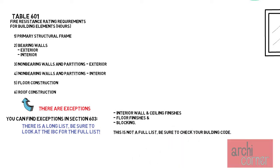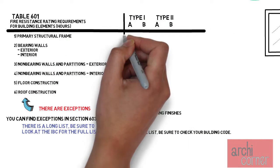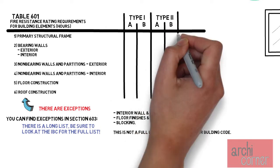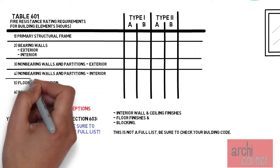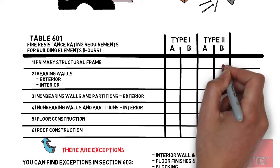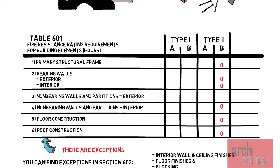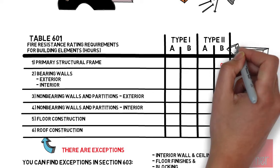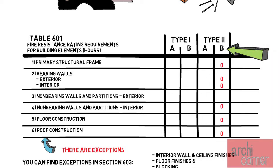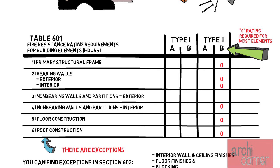Now back to the main elements. The second item we have to worry about is fire resistive rating. Here's a simplification of table 601. You will notice, for example, that a type 2B building does not need any specific ratings for any of the building elements. So as long as the building is constructed with non-combustible material, you can have a type 2 building.